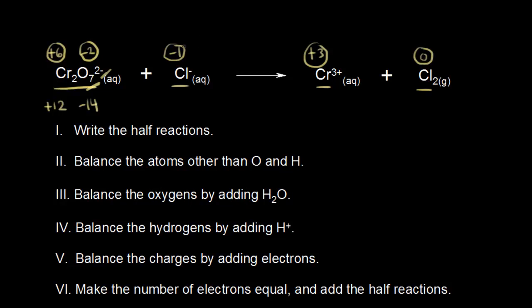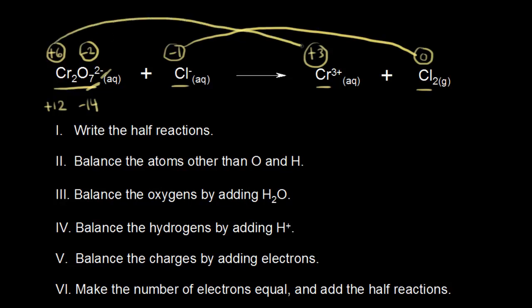If we look at chlorine, it went from an oxidation state of negative 1 to an oxidation state of 0 — that's an increase in the oxidation state, so chlorine was oxidized. Chromium went from plus 6 to plus 3 — that's a decrease in the oxidation state, a reduction. Therefore, chromium was reduced. This is a redox reaction because something is oxidized and something is reduced.